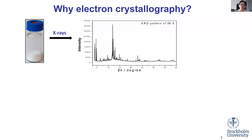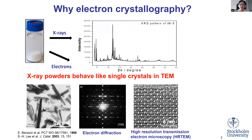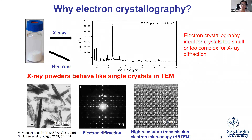X-ray powder diffraction is used on a daily basis for phase identification. Sometimes it is possible to solve structures using X-ray powder diffraction, but it's very difficult because you don't get very many peaks and the peaks are overlapping. However, those powders actually behave as single crystals on the electron microscope, and you can get diffraction data and high resolution images where you can see atoms. Electron crystallography can be used for structure determination of crystals too small or too complex for X-ray diffraction.